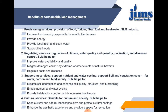Benefits of sustainable land management are divided into four kinds of services: provisioning services, regulating services, supporting services, and cultural services. Provisioning services represent an increase in food security; they provide energy, local fresh and clean water, and support livelihoods. Regulating services improve water availability and quality, mitigate damages caused by extreme weather events or natural hazards, and regulate pests and diseases.